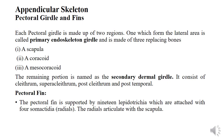Next is the appendicular skeleton. First, the pectoral girdle and fin. The pectoral girdle is made of two regions. The lateral area is called the primary endoskeleton girdle and the remaining portion is called the secondary dermal girdle. The primary endoskeleton girdle consists of three replacing bones: scapula, coracoid, and mesocoracoid. The scapula articulates with the pectoral fin, the coracoid forms the base of the pectoral girdle, and the mesocoracoid is present above the coracoid and interior of the scapula.